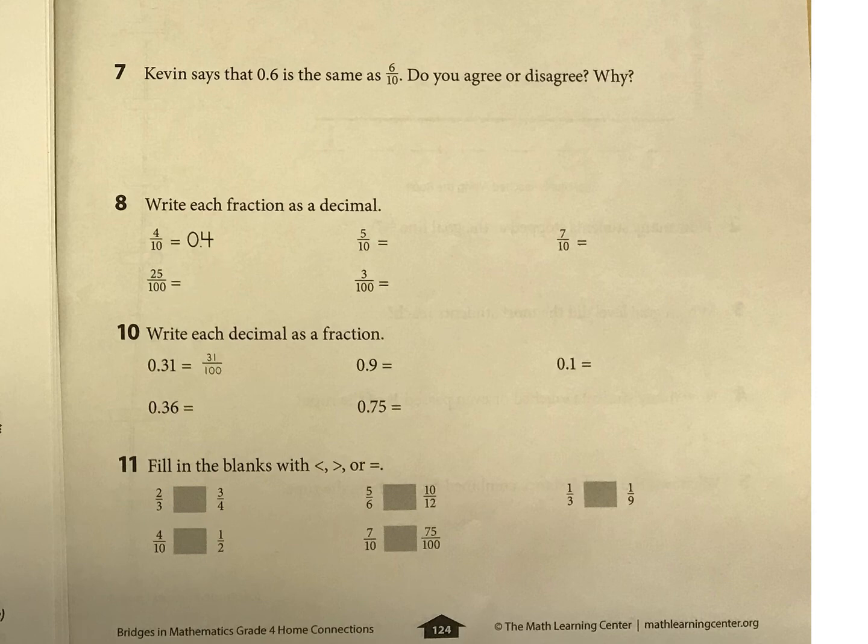I'll help you out with 25 hundredths. That would just be 0.25 or you can put the zero in front too. And then here, you're doing the opposite where you're writing those as a fraction. So for example, that as a fraction is 9 tenths. So you'd write it like that.